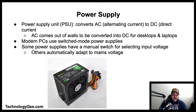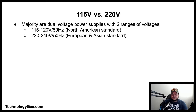Modern personal computers universally use switch-mode power supplies. Some power supplies have a manual switch for selecting input voltage while others automatically adapt to the mains voltage. The majority of power supplies are dual voltage, dealing with two ranges: 115 to 120 volts at 60 Hz, which is the North American standard, and 220 to 240 volts at 50 Hz, which is the European and Asian standard.